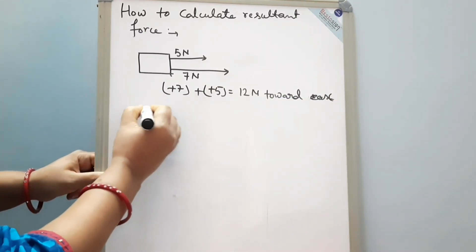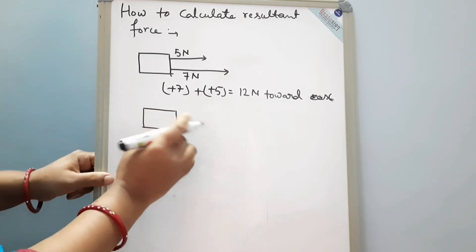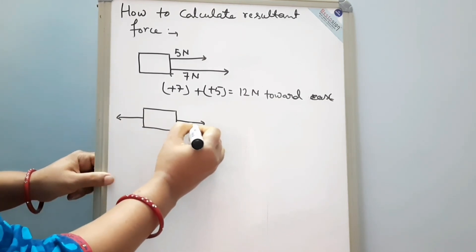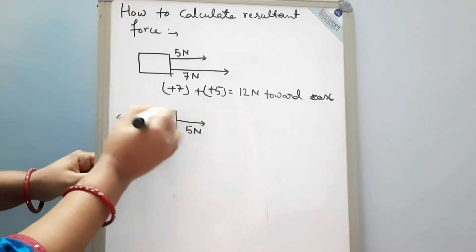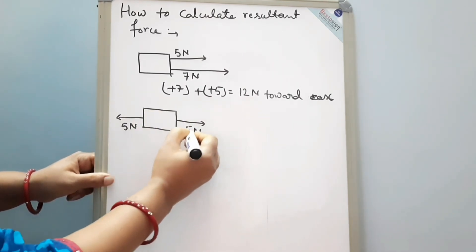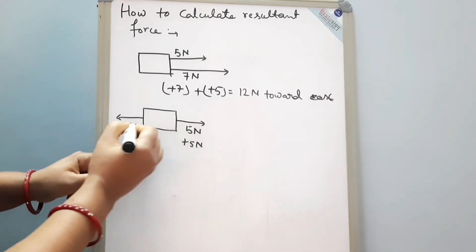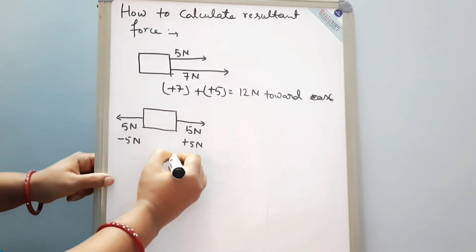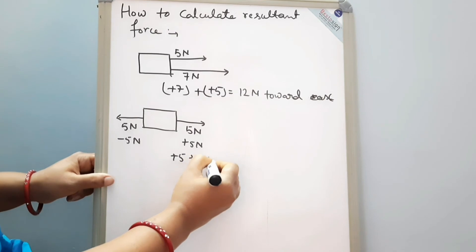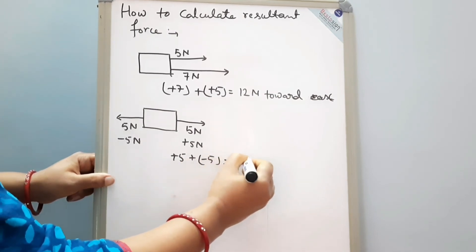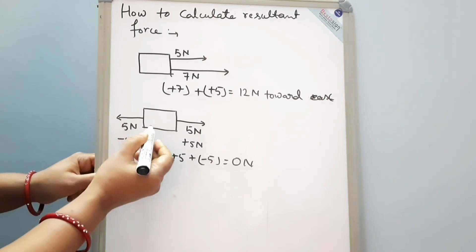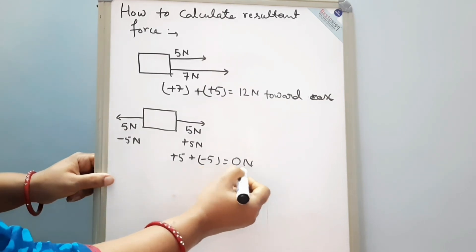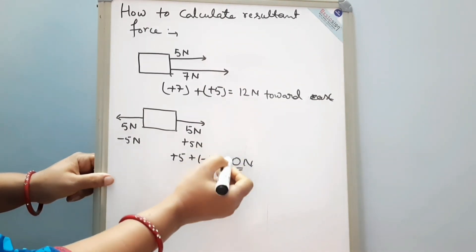Second example: suppose this is a block and the same amount of force is working in both directions — 5 Newton and 5 Newton. The direction of one is plus 5 Newton and the other is minus 5 Newton. When we add: plus 5 plus minus 5, our final answer will be 0 Newton. So when the same size of force works on an object, the resultant force is equal to 0 Newton, meaning no overall force is working on the object.